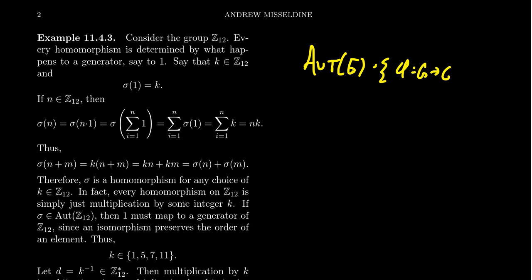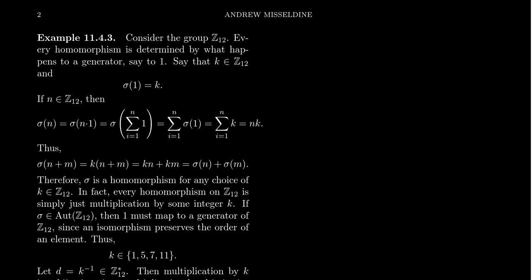Can we describe automorphisms for abelian groups? The simplest example would be to consider a cyclic group. For a concrete example, let's consider the cyclic group of order 12. As we learned in abstract algebra 1, every homomorphism from a cyclic group is uniquely determined by what the generator does. So if you have any map sigma from Z12 to any group whatsoever,